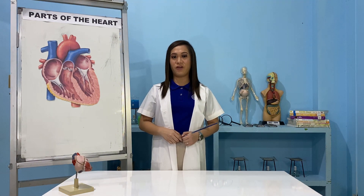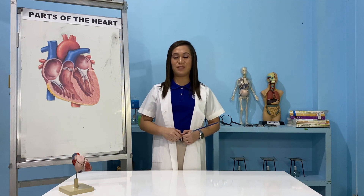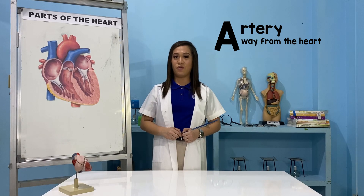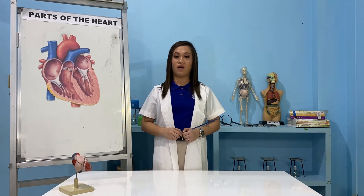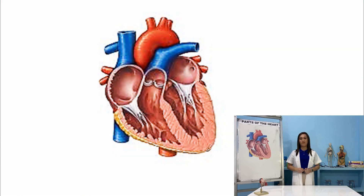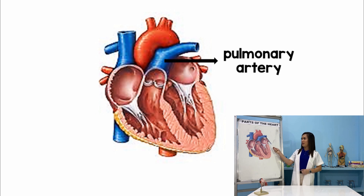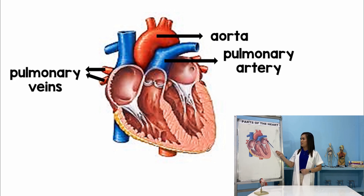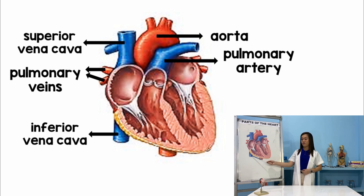Blood moves through different blood vessels. These blood vessels are attached to the heart. The blood vessels that carry blood away from the heart are called arteries. The ones that carry blood back to the heart are called veins. For arteries, we have the pulmonary artery and the aorta. For veins, we have the pulmonary veins and the superior and inferior vena cava.